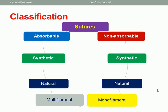The classification of suture material can be divided into two big categories: absorbable and non-absorbable. Also, it can be divided into multi-filament or monofilament, and into synthetic or natural. So there are different types of classification, and we will cover all of them. Suture could be absorbable or non-absorbable; each could be synthetic or natural, and also multi-filament or monofilament.